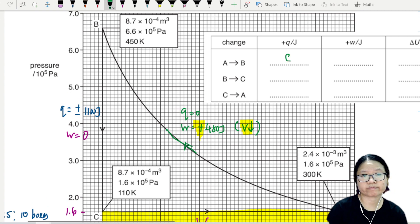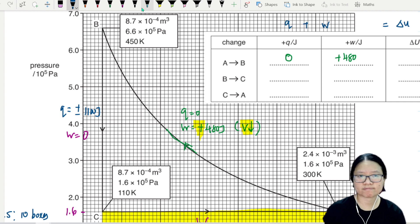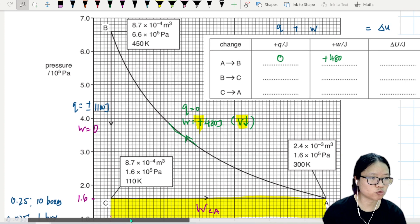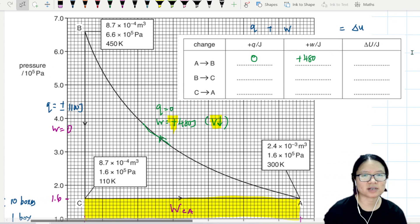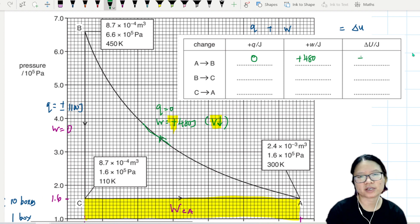Right now we're going to think about process A to B first, because A to B is our first process. From A to B, I know the heat transfer is zero, question given. And then the work done is positive 480 joules because volume decreased. From the first law of thermodynamics, delta U is actually equal to q plus w. Meaning in this sudoku puzzle you take this plus this, you get delta U. So zero plus 480 is positive 480, done.